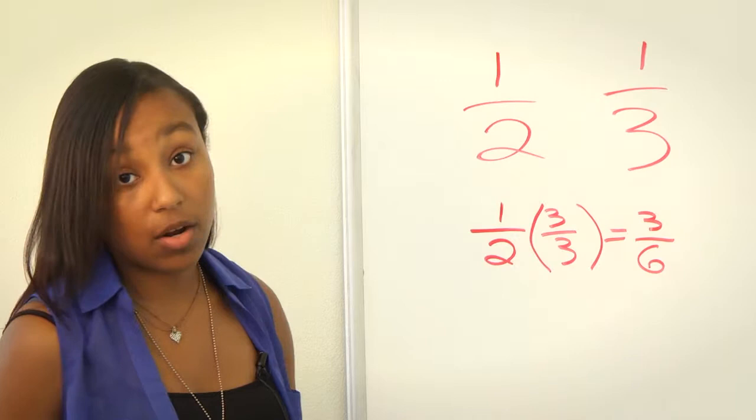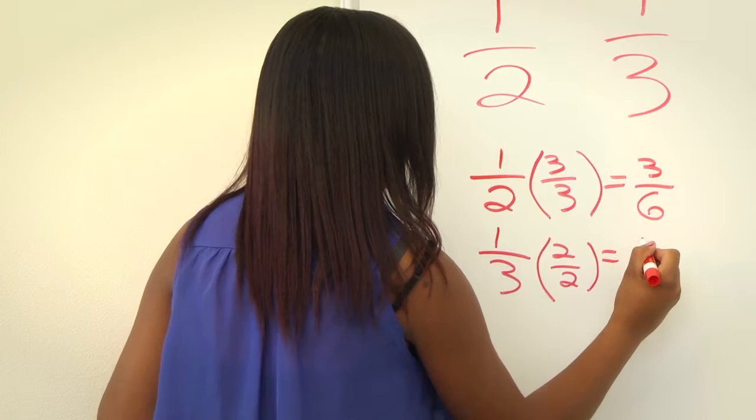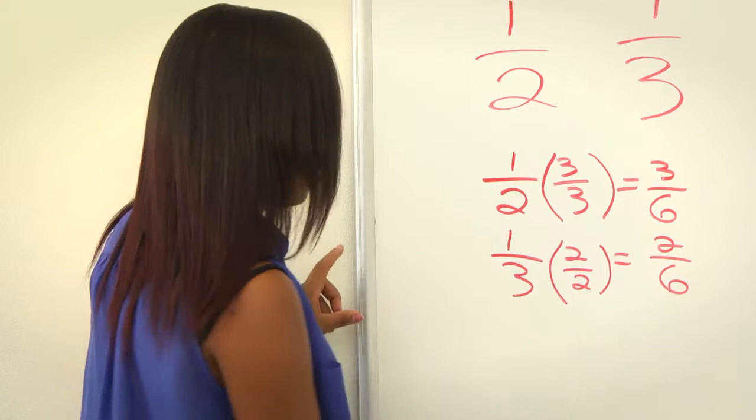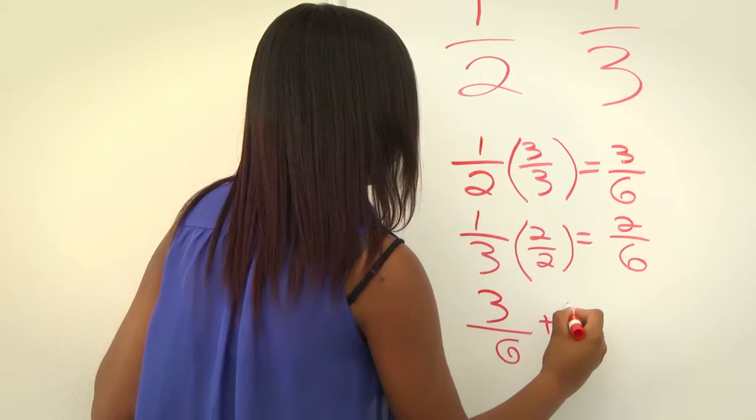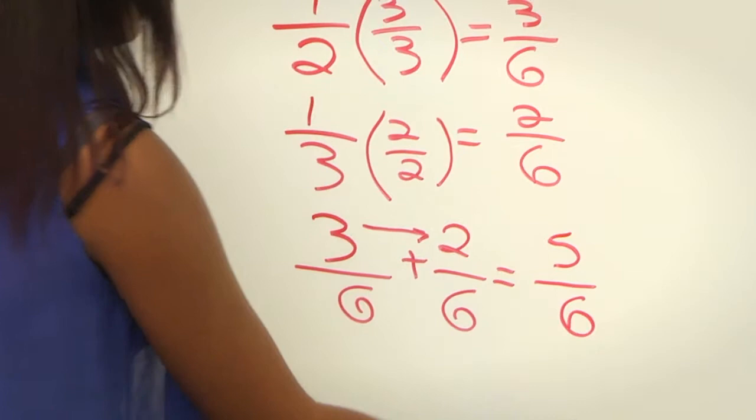Then we're going to multiply 1 third by an equivalent of 1 to get 2 over 6. So it's going to be 1 third times 2 over 2 will equal 2 over 6. Now that they have the same denominator, we can add them. But you're only going to add the numbers in the numerator. The denominator stays the same. So in this case it would be 3 over 6 plus 2 over 6 equals, so these two you're going to add while these two stay the same, which is going to be 5 over 6.